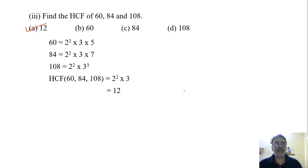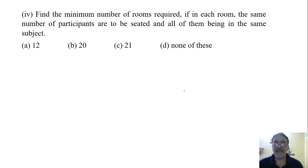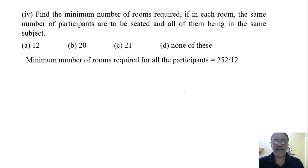Now the fourth: find the minimum number of rooms required if in each room the same number of participants are to be seated and all of them being in the same subject. So what we have to do? Minimum number of rooms required for all the participants: 252 ÷ 12 = 21. The correct option is C, 21.